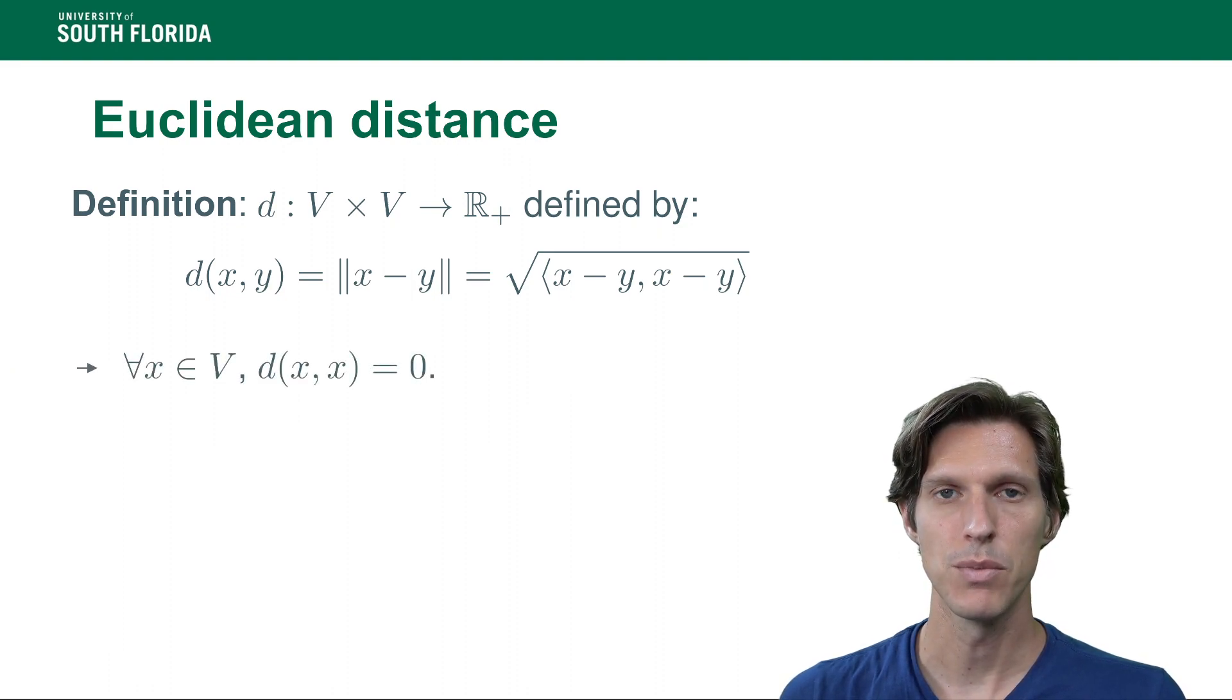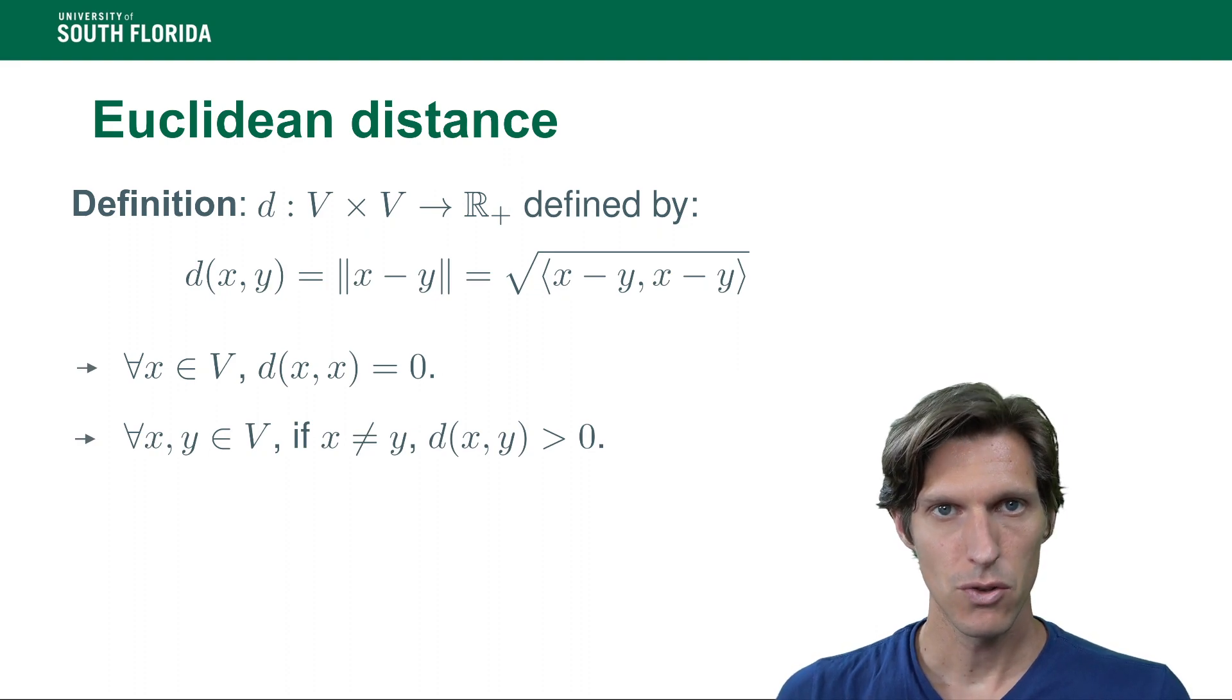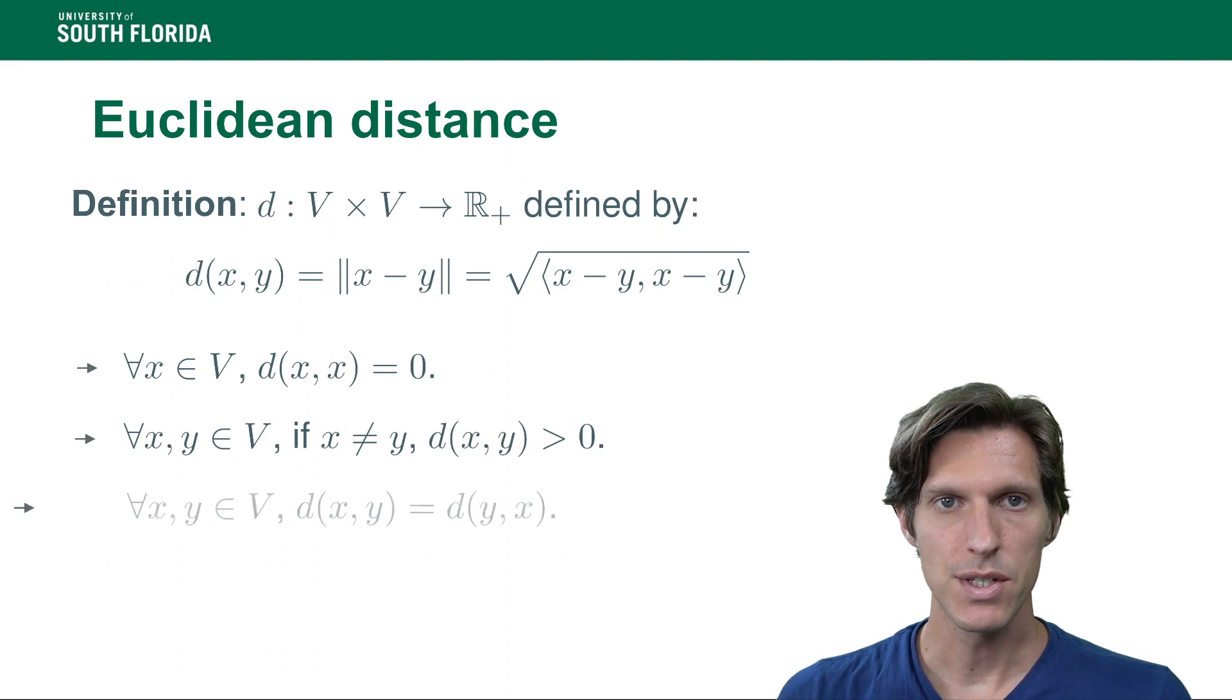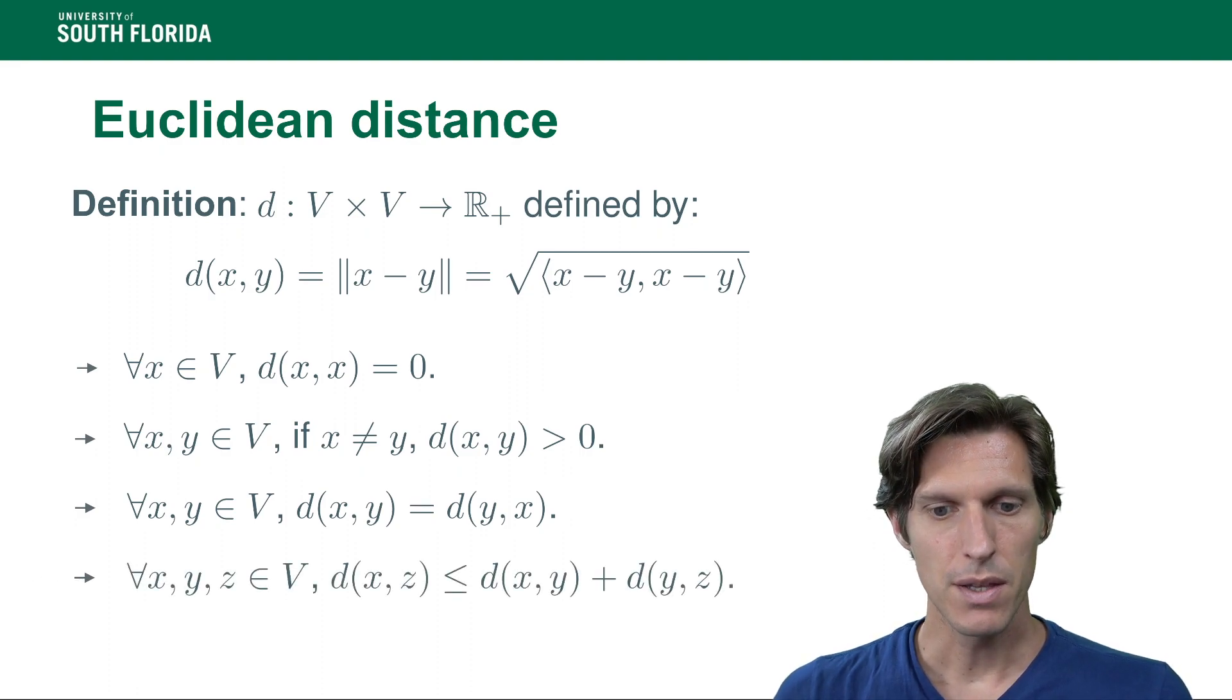The distance between x and x is zero, so it satisfies the normal definition of a distance. Every time x is different than y, the distance is greater than zero. The distance is symmetric and there is a triangular inequality with distances.